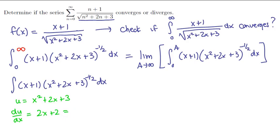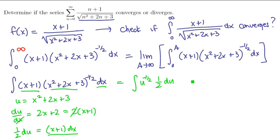If we pull out that 2, then we have 2(x+1). By rearranging, we'll have (1/2)du = (x+1)dx. And that's exactly what we would need to fit this differential. Those terms become (1/2)du. This term becomes u^(-1/2).